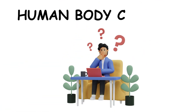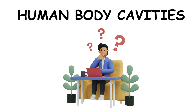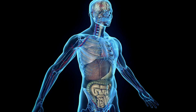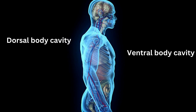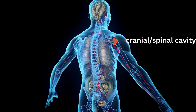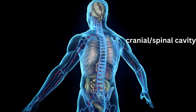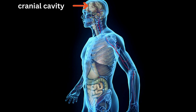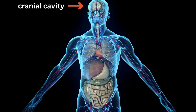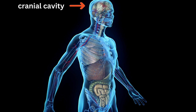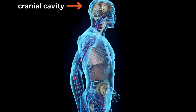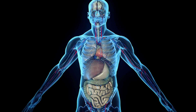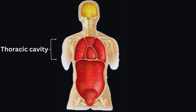The human body is divided into several cavities, each containing and protecting specific organs. The major cavities are dorsal and ventral body cavities. The dorsal body cavity is subdivided into cranial and spinal cavities. The cranial cavity houses the brain and is formed by the bones of the skull. The spinal vertebral cavity encases the spinal cord and is formed by the vertebrae. The ventral body cavity is subdivided into the following cavities.